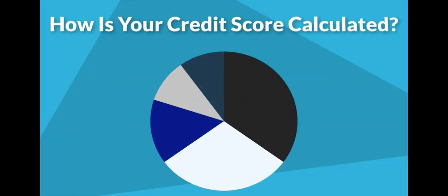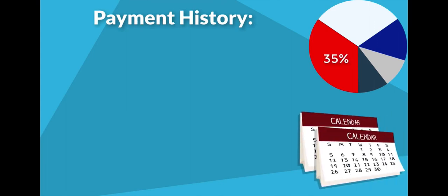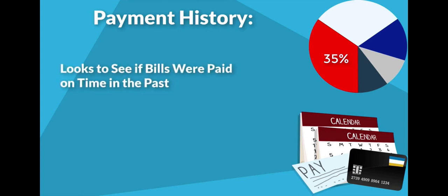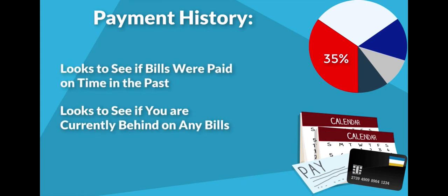Let's take a look at what makes up your overall credit score. The biggest factor in your credit score is your payment history, and it composes 35% of your total score. The payment history factor is looking to see if you have paid your bills on time in the past and if you are currently behind on any of your bills.